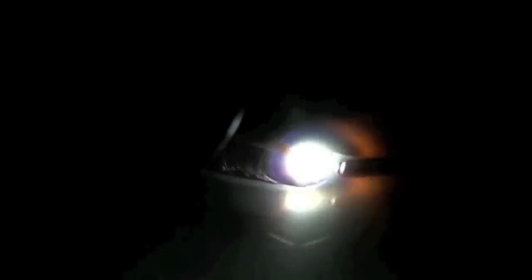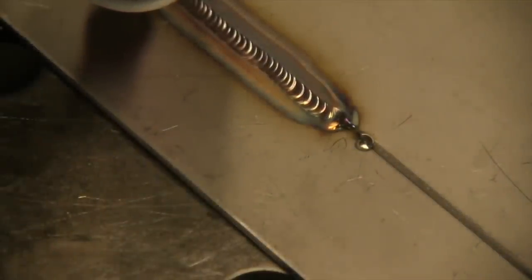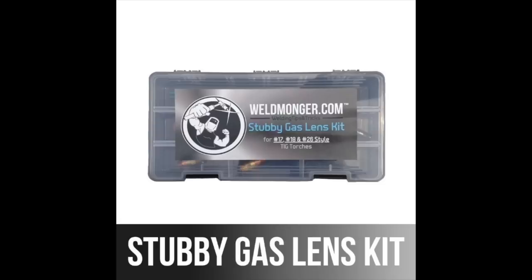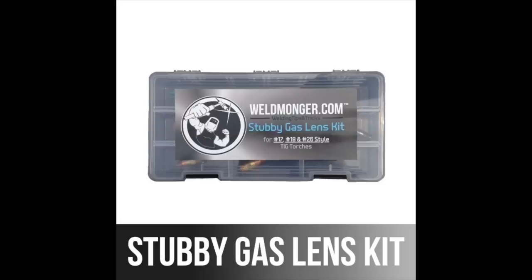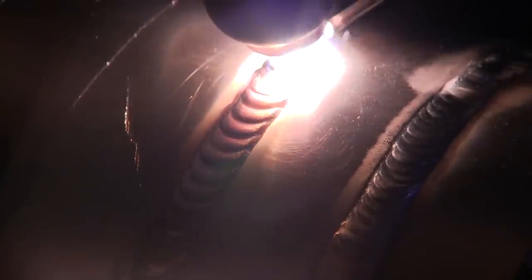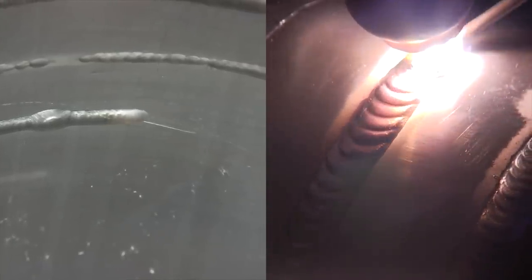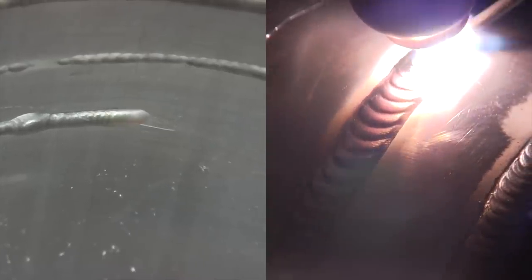So stubby gas lens kit shrinks your torch as well as gets better coverage. I like to use a number six gas lens for aluminum. It takes a little bit less gas flow and it seems to stabilize the arc just a little bit. This is on a turntable on some aluminum that was about 70 thousandths thick and it's interesting to see how that penetrates through there with that oxide film.